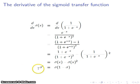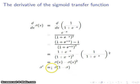So sigma prime — we can go ahead and factor this — is sigma times 1 minus sigma. This expression is very easy and nice to keep on tap, so we'll use this later.